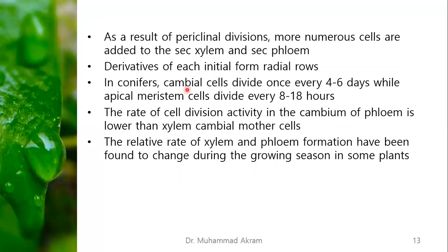In conifers, cambium cells divide once every four to six days, while apical meristematic cells divide every 18 hours, meaning apical meristem activity is much faster than cambium zone activity. The rate of cell division in the phloem cambium mother cells is lower than in xylem cambium mother cells, which is why xylem tissue is more abundant than phloem. The phloem is present as a small layer outside the wood, whereas the wood is larger. The relative rate of xylem and phloem formation has been found to change during the growing season in some plants.